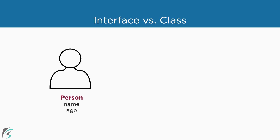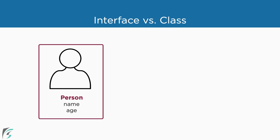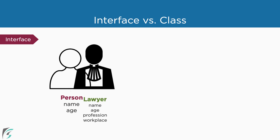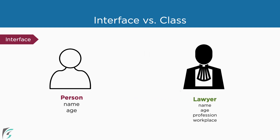Taking a simple real-world analogy for interface and class: let's say I have a person. I don't have much detail about this person, just that it has a name and age. So this person is much like an interface, which has created a contract to have a name and age, but the details are not in yet.